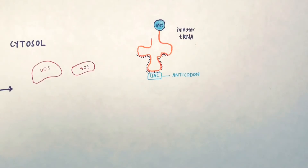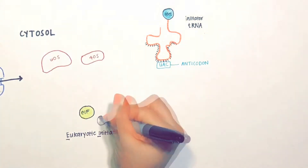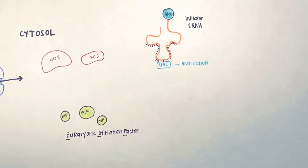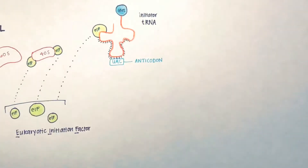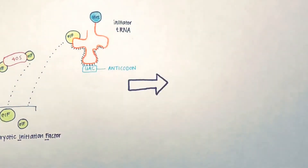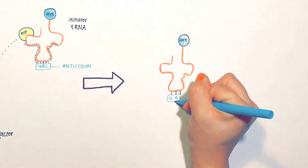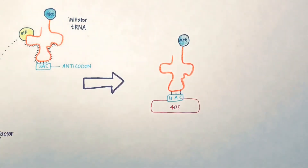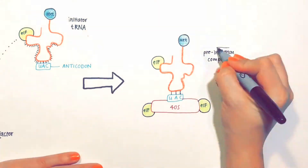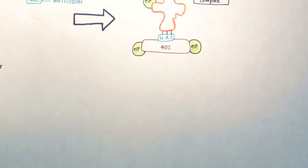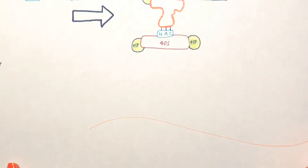The tRNA is made up of nucleotides, but three nucleotides at the bottom end are special because they are the nucleotides that will bind with the mRNA — this is called the anticodon. The initiator tRNA contains a specific anticodon, UAC. There are also eIFs, which stand for eukaryotic initiation factors. These are proteins that help bind the charged tRNA directly to the 40S small subunit, forming the pre-initiation complex.